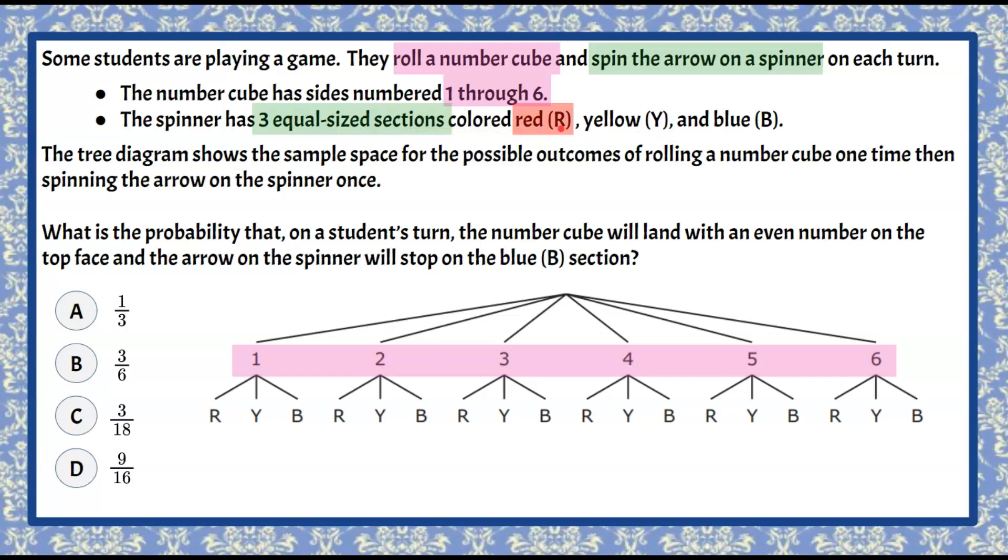When we look at our red outcomes, let's look at our tree diagram, we see that on our tree diagram it's represented with R. So we have these six possible times we could get red after we roll the die.